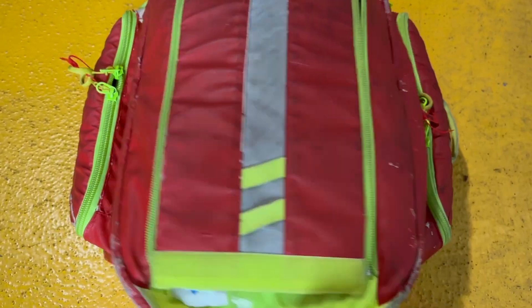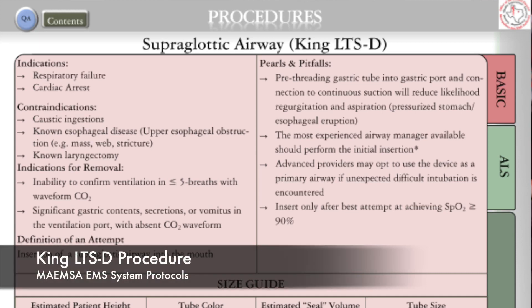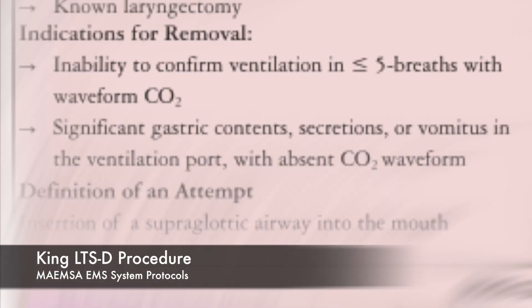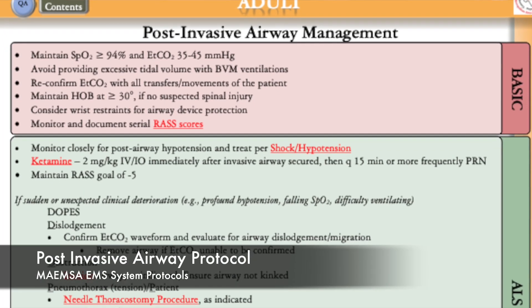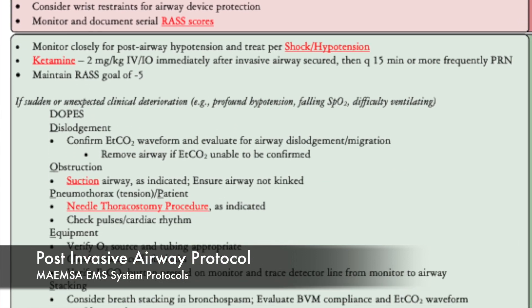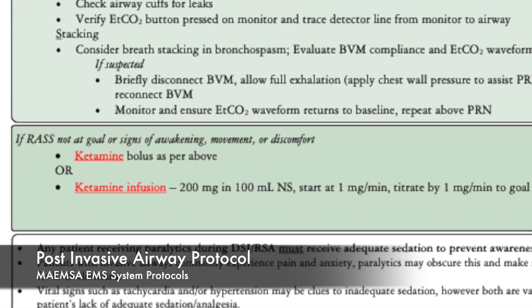Ventilate as needed during the 90-second wait. You'll then place the supraglottic as usual — this is described in the supraglottic insertion procedure. Be sure to confirm placement with waveform end-tidal CO2 of at least 5 mmHg for at least 5 breaths. Once the tube is in place, refer to the post-invasive airway management protocol for ongoing sedation and analgesia.